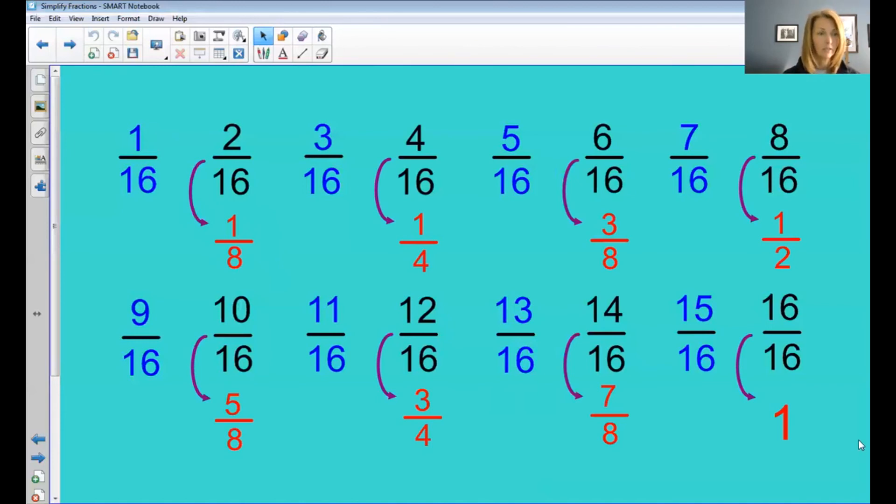Ten-sixteenths simplifies to five-eighths. Twelve-sixteenths to three-fourths. Fourteen-sixteenths to seven-eighths. And sixteen-sixteenths, of course, is the same thing as one whole, or in this case one whole inch, a one-inch socket.